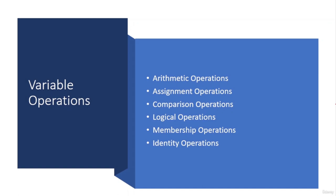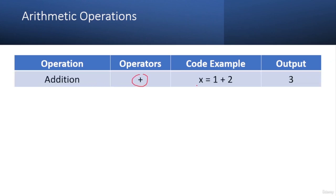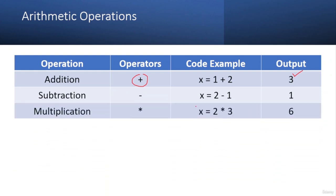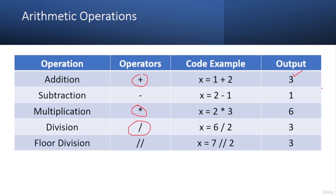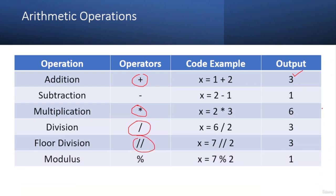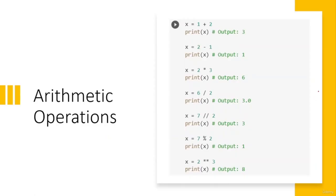Python supports a wide range of operations on variables, including arithmetic, assignment, comparison, logical, membership, and identity operations. For arithmetic operations: addition uses '+' (e.g., x = 1 + 2 gives 3); subtraction, multiplication with '*', division with '/', floor division with '//', modulus, and exponentiation with '**' (e.g., x = 2 ** 3 means 2 to the power 3, which equals 8).